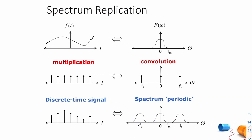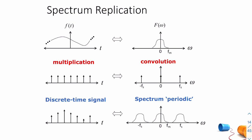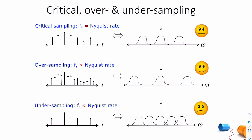As you sample in the time domain, the same thing happens in the frequency domain — your original spectrum gets replicated and you have these replicas that repeat. The higher the sample rate, the greater the guard band we have between adjacent spectra. Here we have the three conditions: critical sampling, oversampling, and undersampling.